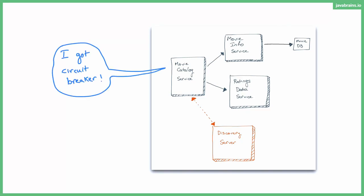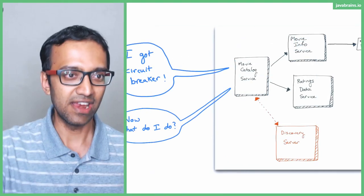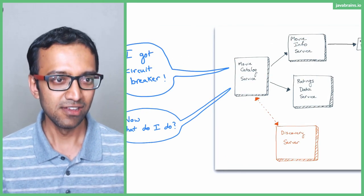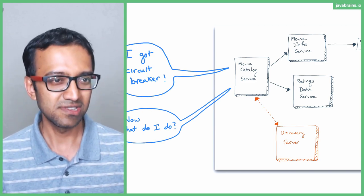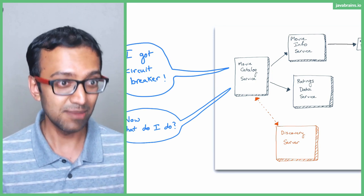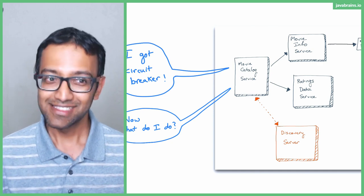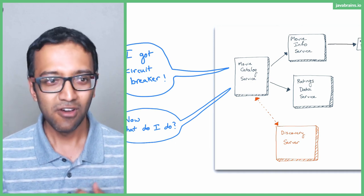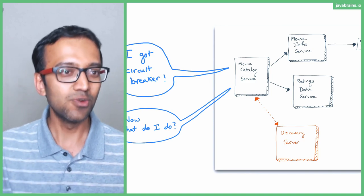Now we have the movie catalog service with a circuit breaker. When a request comes in, what do you do? In the case of an electrical circuit, it's fairly simple - you just disconnect the circuit, so power is out for a certain portion. But this is a microservice. There's a request coming in and the person making the request expects you to do the job. Somebody comes and says 'give me movie info' - you can't just say nope, I'm not doing that. So you need a mechanism for any microservice with a circuit breaker to do something when it cannot do what is asked of it.